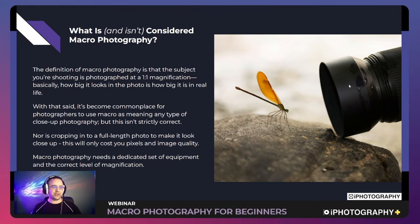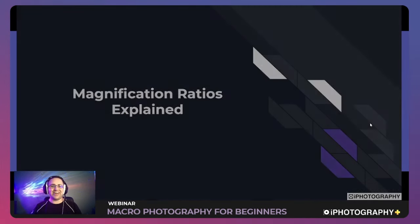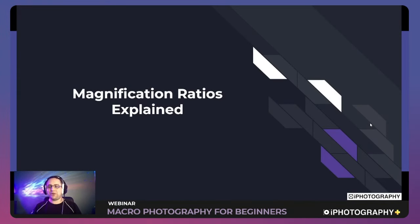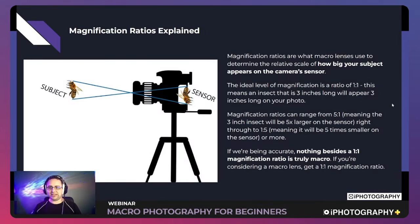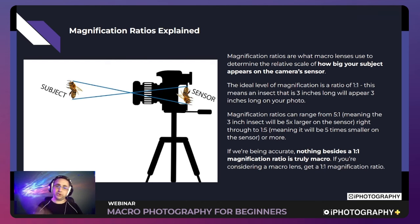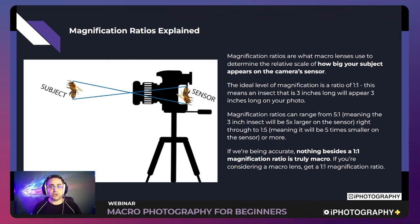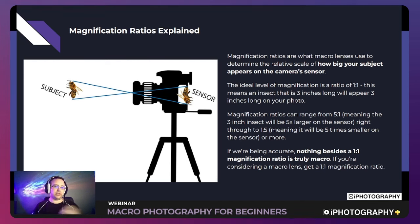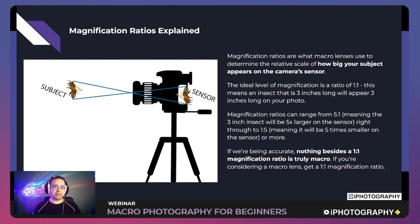Let's get into a bit of the science. If you've been through the iPhotography course, some of this will be familiar. Magnification ratios are what lenses — and macro lenses specifically — use to determine the relative scale of how big your subject appears. A simple ratio of one-to-one means an object, say a wasp or bee, would appear exactly the same size on the camera sensor as it is in real life.